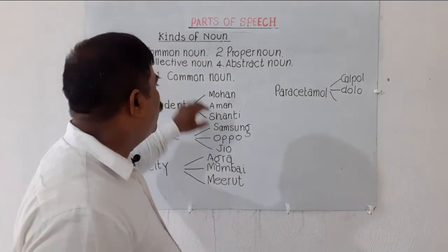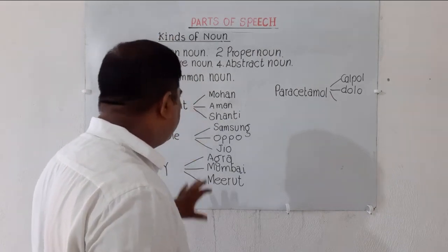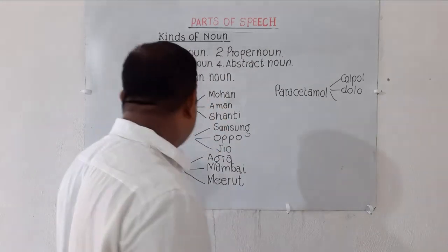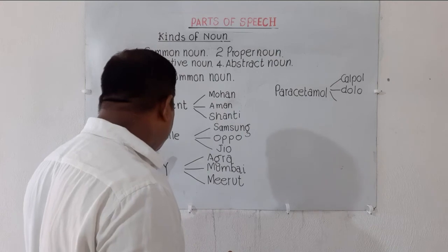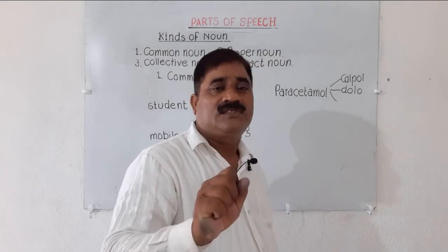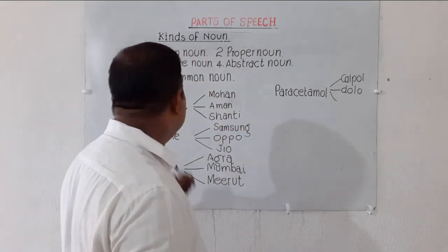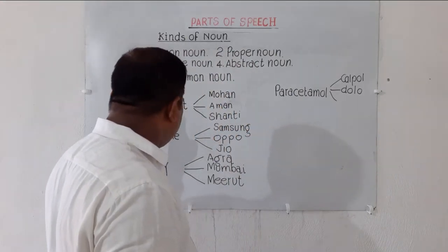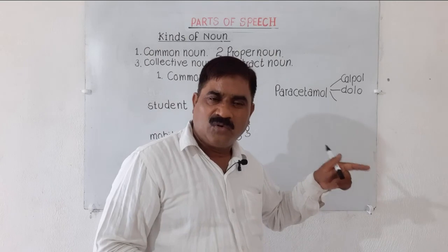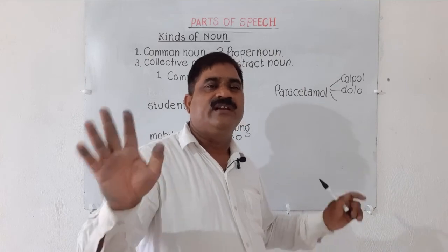So are you getting my point? Student, mobile, city, paracetamol — these are generic names for person, place, thing. So these generic names like student, mobile, city, and paracetamol are common nouns. A common noun is a generic name for person, thing, place, etc.